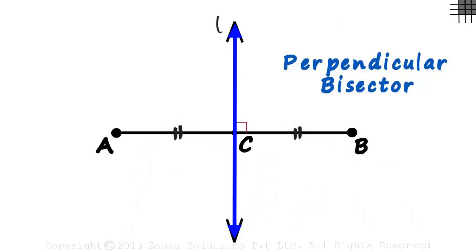The perpendicular bisector of a segment divides that segment into two equal parts and is also perpendicular to it.